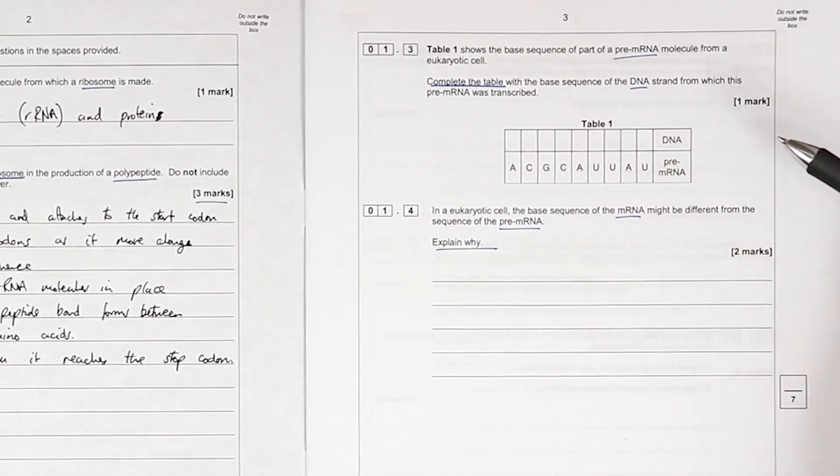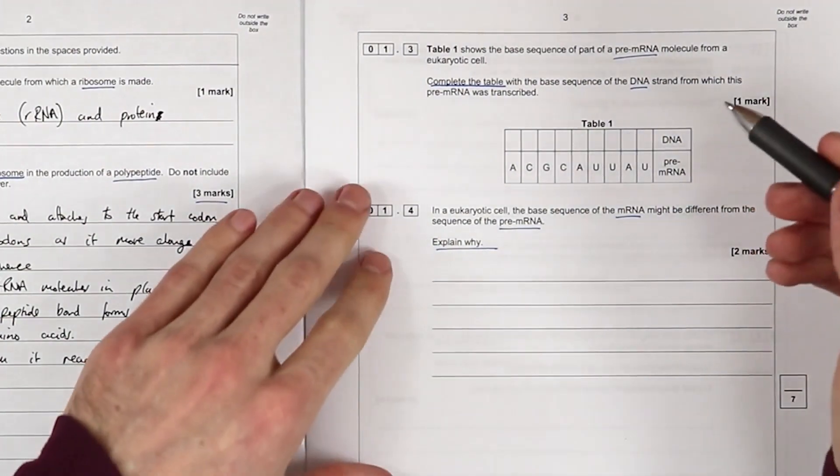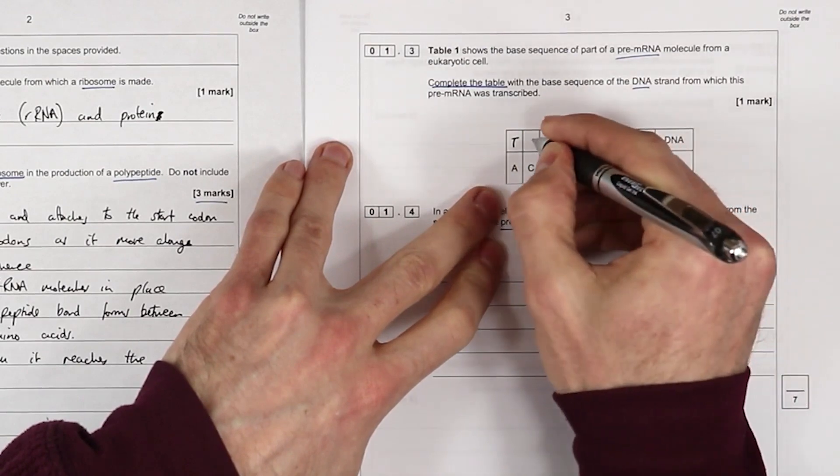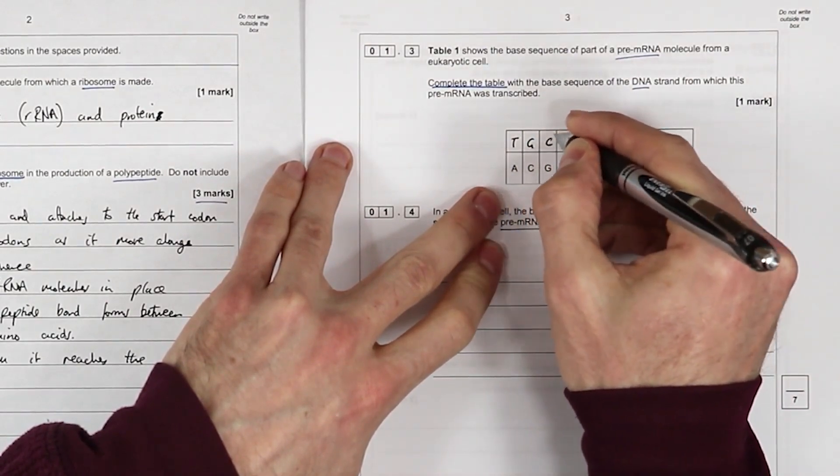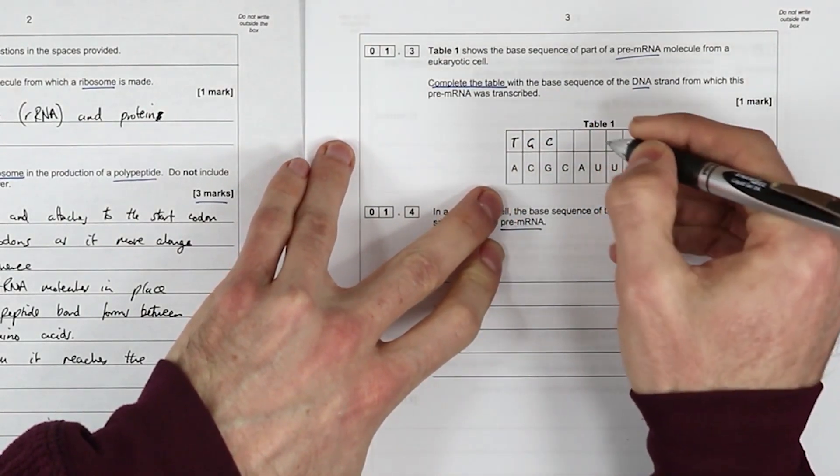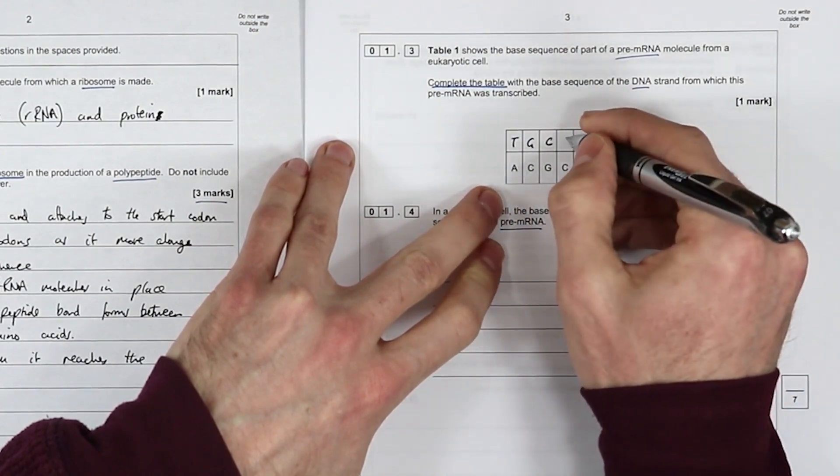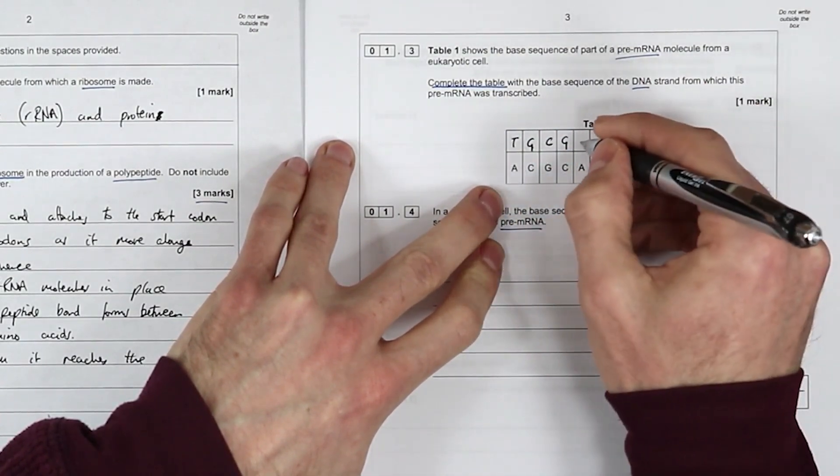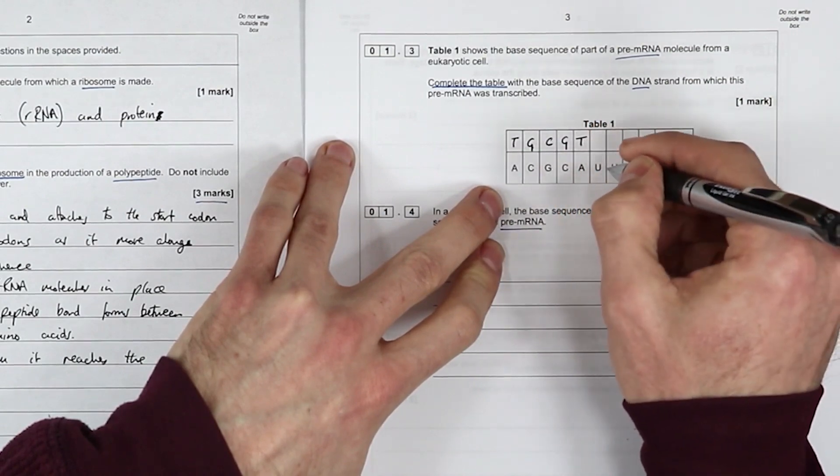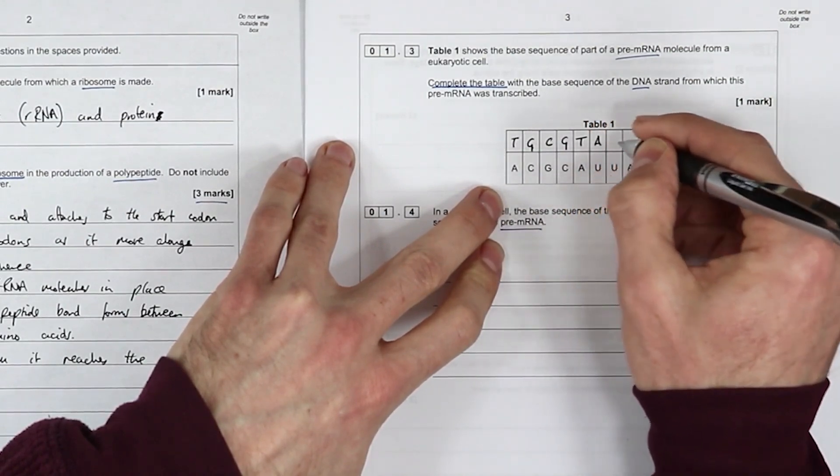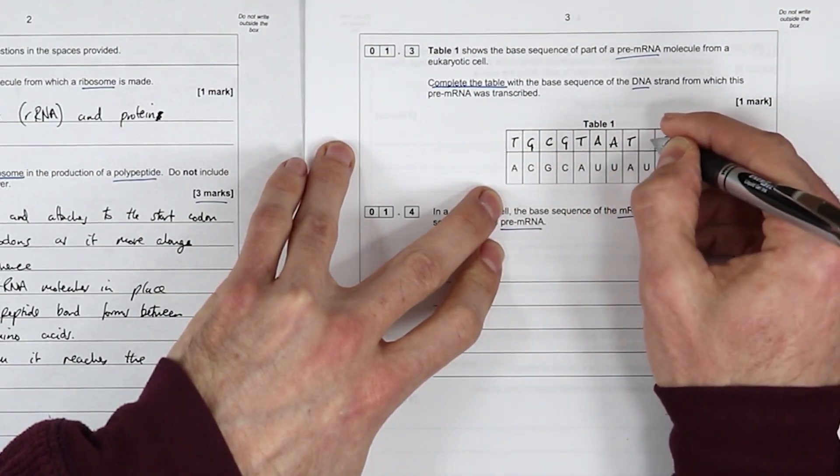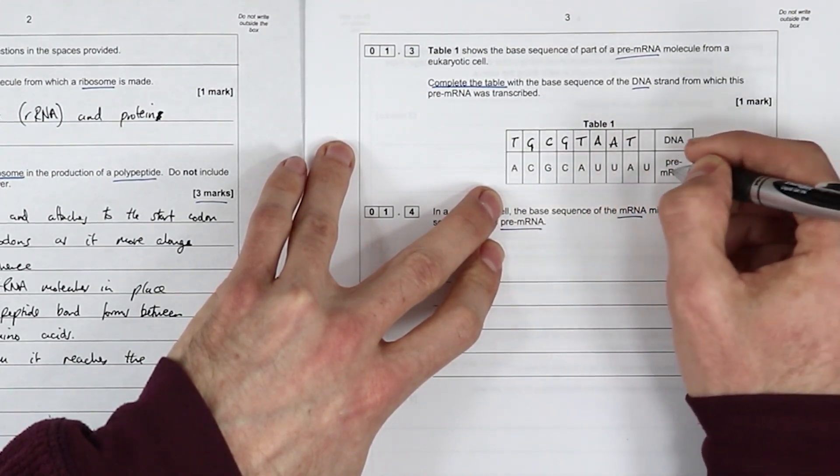Complete the table for one mark. What DNA is complementary to messenger RNA? A is partnered with T, C with G, G with C. Make sure your C's and G's are distinguishable. Obviously if the examiner can't read what you've written then you are in trouble. A with T. Now U is effectively T, so U is going to be partnered with A. Thymine is not present in pre-messenger RNA.